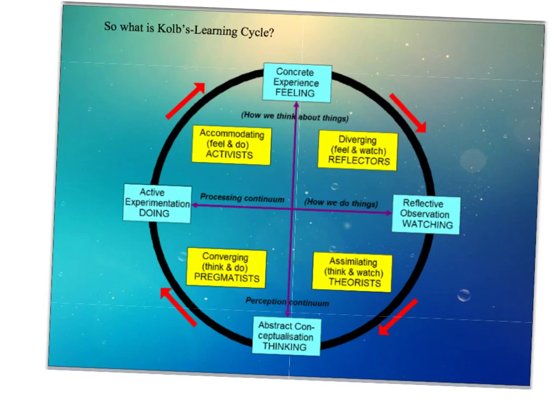Kolb's 1984 proposed a four-stage experiential learning cycle by which people understand their experiences and as a result modify their behaviour. There are different takes on this if you talk to different people or go to different conferences, but my take is that we have four main areas as you can see.